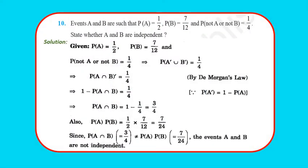Question 10: Events A and B are such that P(A) = 1/2, P(B) = 7/12, P(not A or not B) = 1/4. By De Morgan's law, P(A'∪B') = P(A∩B)' = 1/4, so P(A∩B) = 3/4. But P(A)×P(B) = 1/2 × 7/12 = 7/24. Since P(A∩B) ≠ P(A)×P(B), the events are not independent.